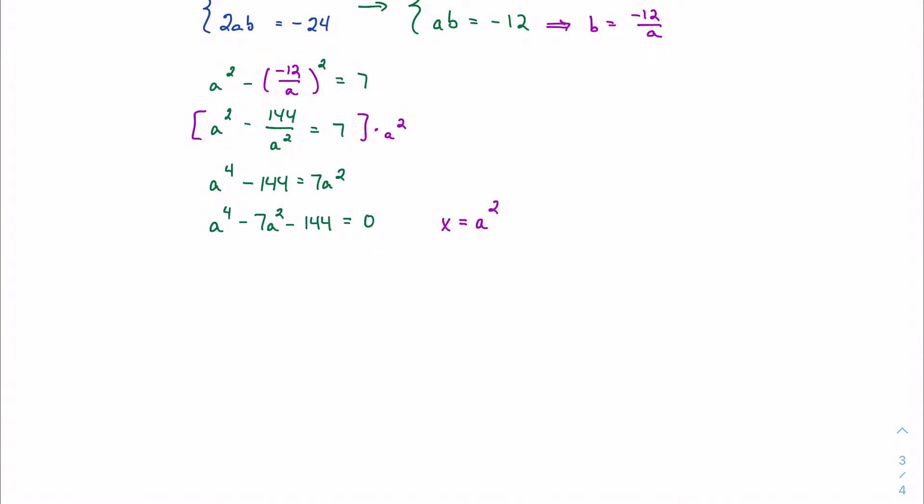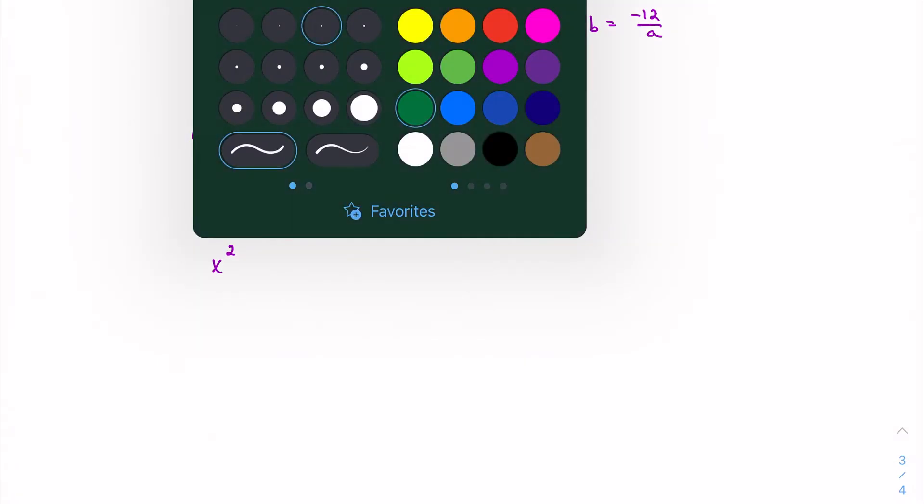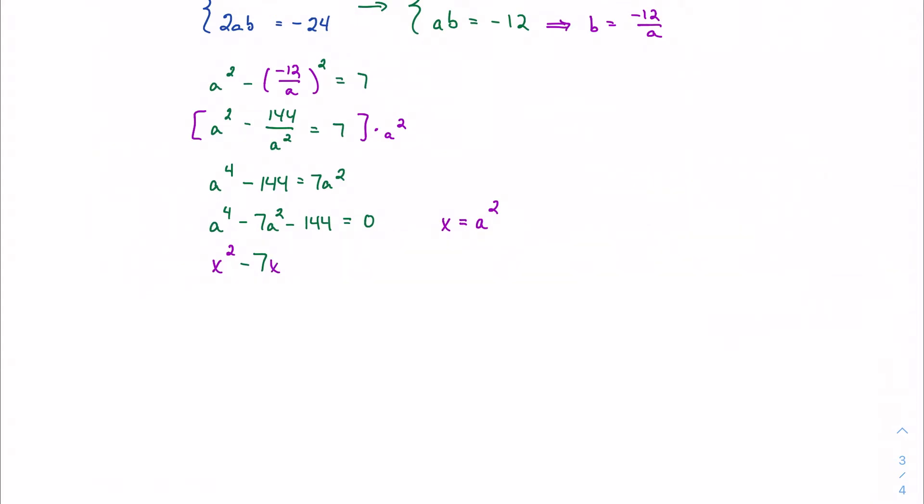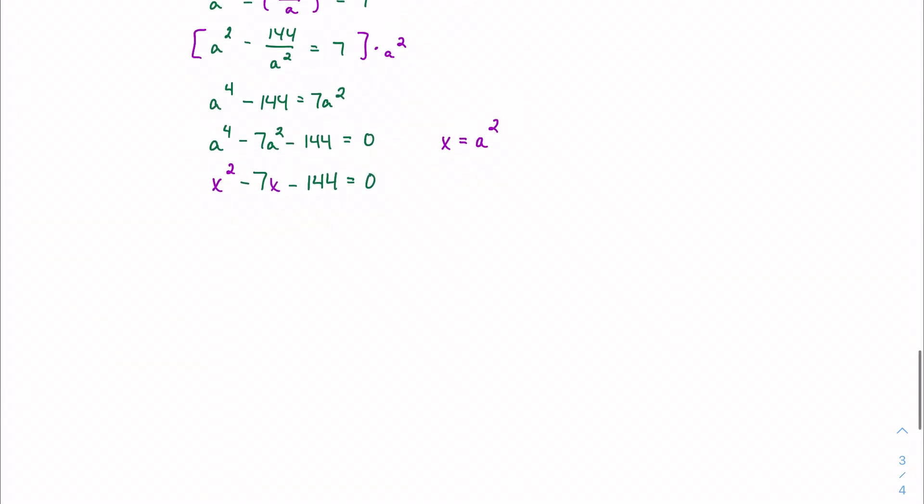Let's let x be equal to a squared. I could try to factor this and look at it as quadratic, but it's really intimidating when you see an a to the fourth. By changing up, essentially changing the language that I'm talking about this equation in, I'm able to look at this as something that's a little more normal to us.